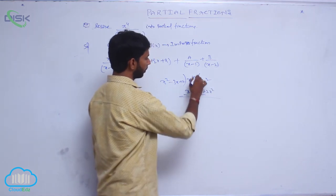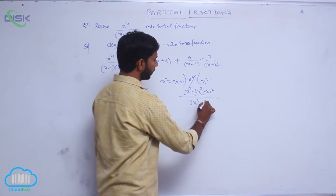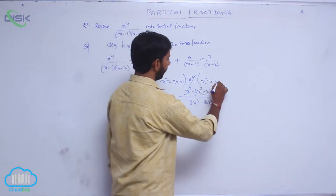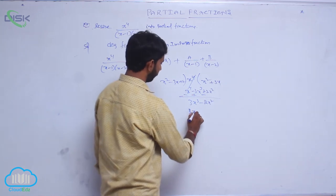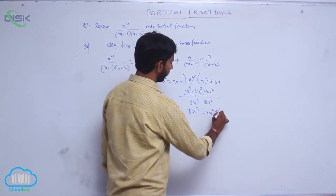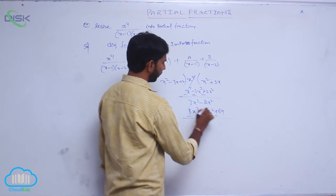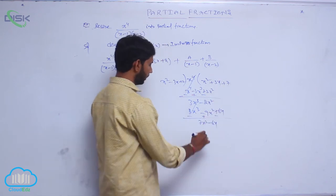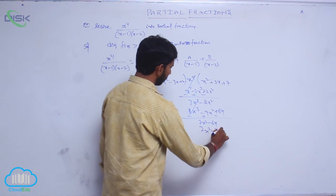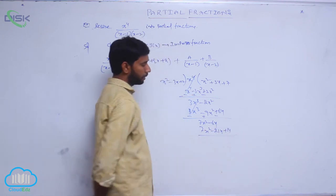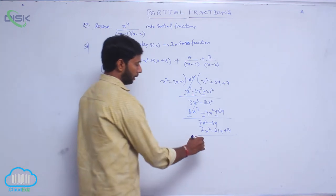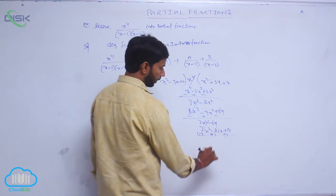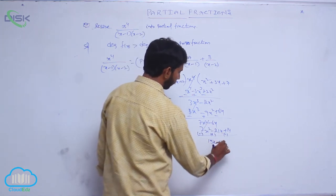Subtracting these terms gives 3x cubed minus 2x squared. Then 3x cubed minus 9x squared plus 6x. Subtracting the next terms gives 7x squared minus 6x, that is 7x squared minus 21x plus 14. Subtracting these terms: 7x squared cancels, leaving remainder 15x minus 14.